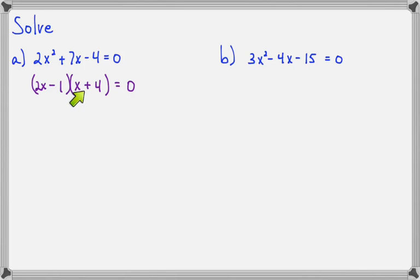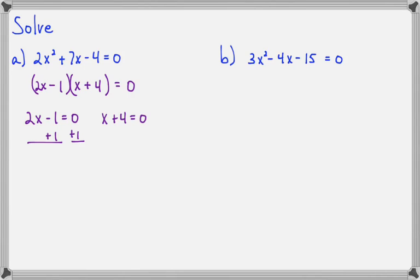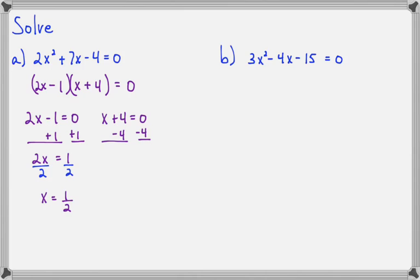Since this times this equals 0, one of the factors must be 0. If 2x minus 1 equals 0, we add 1 to both sides to get 2x equals 1, then divide both sides by 2 to get x equals 1 half. For the other factor, x plus 4 equals 0, we subtract 4 from both sides to get x equals negative 4. So our two solutions for this equation are 1 half and negative 4.